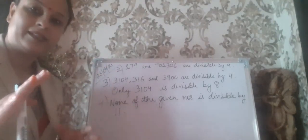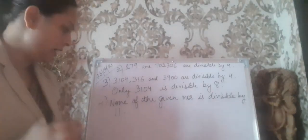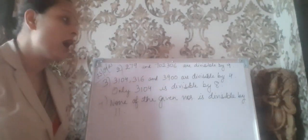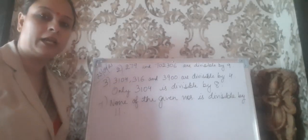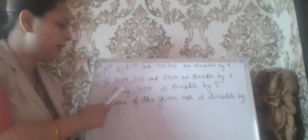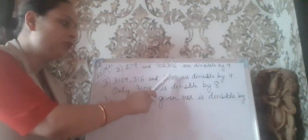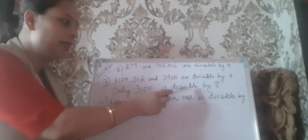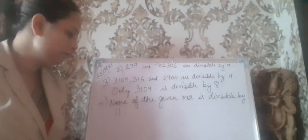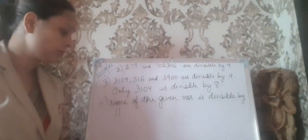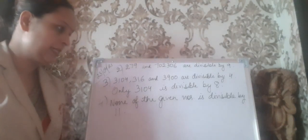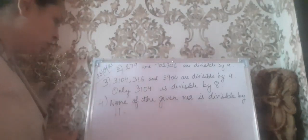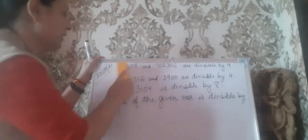The first question was about the divisibility test that I have already given you. The second question: 279 and 702306 are divisible by 9. Rest of the numbers given were not divisible by 9. Third one: 3104, 316 and 3900 are divisible by 4. Then only 3104 is divisible by 8. And the last question, question number 4: none of the given numbers is divisible by 11. So these are the answers of the questions that I gave you yesterday.